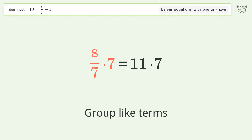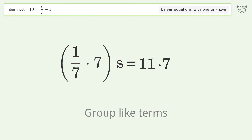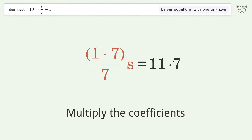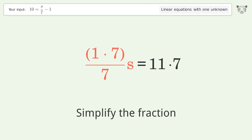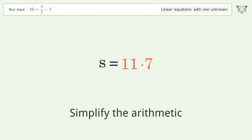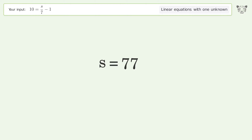Group like terms, multiply the coefficients, simplify the fraction, and simplify the arithmetic. And so the final result is s equals 77.